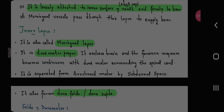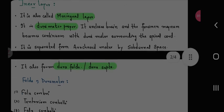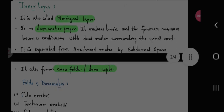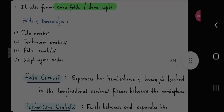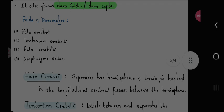Meningeal vessels pass through this layer to supply bone. Inner layer: it is also called meningeal layer, it is dura matter proper. It encloses brain and at the foramen magnum becomes continuous with the dura matter surrounding the spinal cord. It is separated from arachnoid matter by subdural space. It also forms dural folds or dural septa.